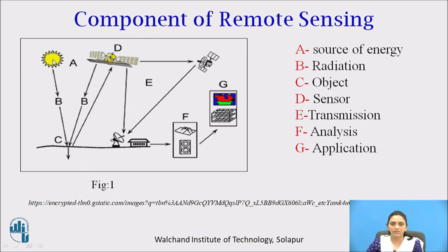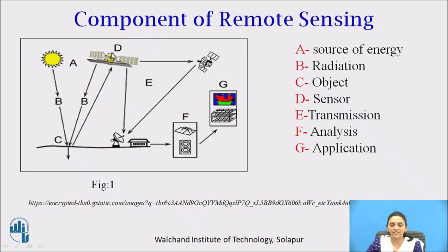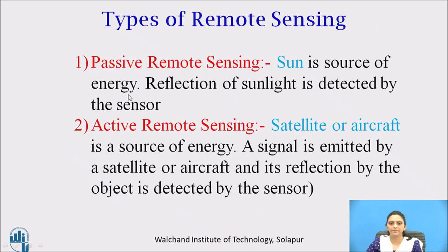In the diagram: A is the source of energy, B is the radiation, C is the object being scanned, D is the sensor, and E is the transmission of the image from one source to another. F is the analysis, and after analysis, G is the application — the information used in various fields. Note that the satellite itself can also be a source of energy, so there are two sources: the sun and the satellite.